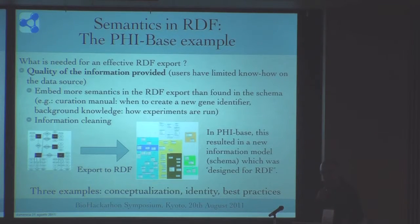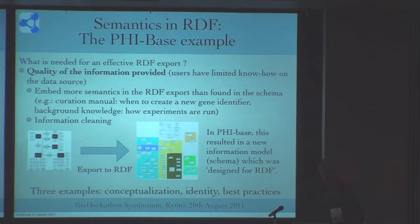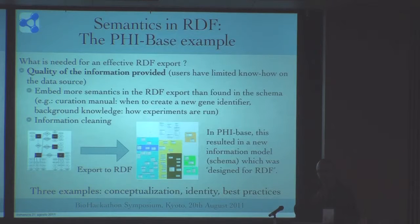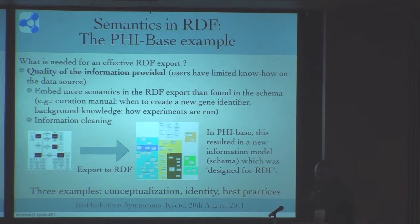For instance, there is a lot of semantics that is actually in curation manuals. If you read the curation manual for curators for this database, they actually specify when to change gene identifiers. So there is a pragmatic definition of URIs, and this is something you should include directly at the RDF level, along with provenance and so on. In this experiment, the main thing in exporting the content of this database to RDF has actually been to redesign the database itself — to define a new schema which was designed to embed more information to be then represented in RDF.